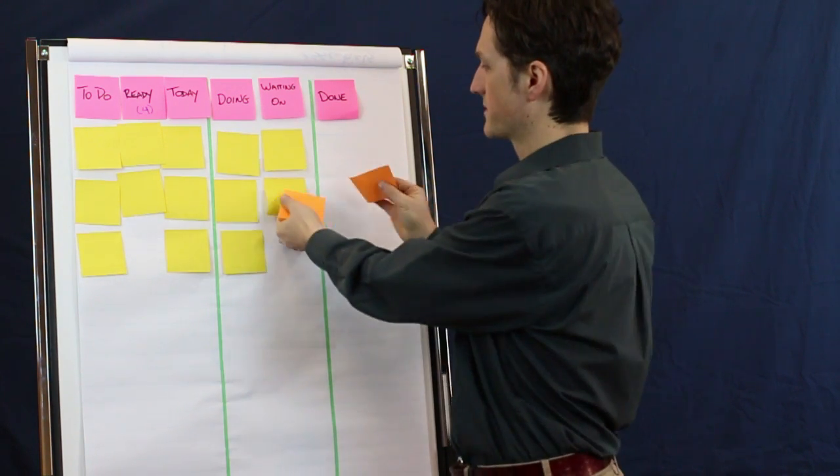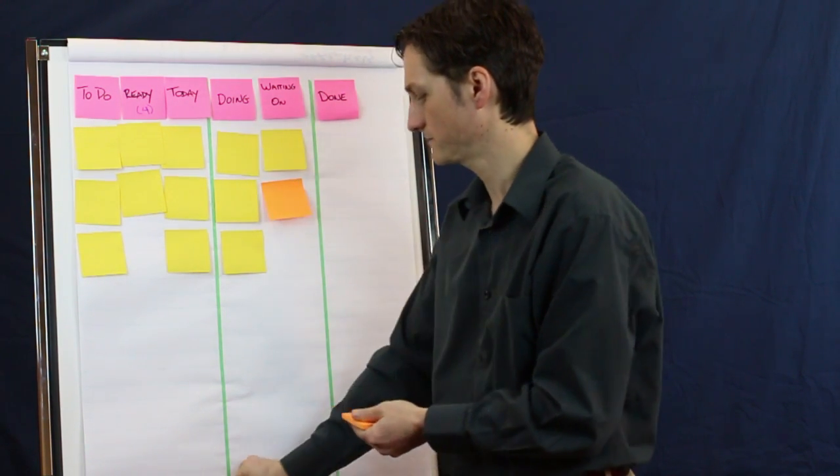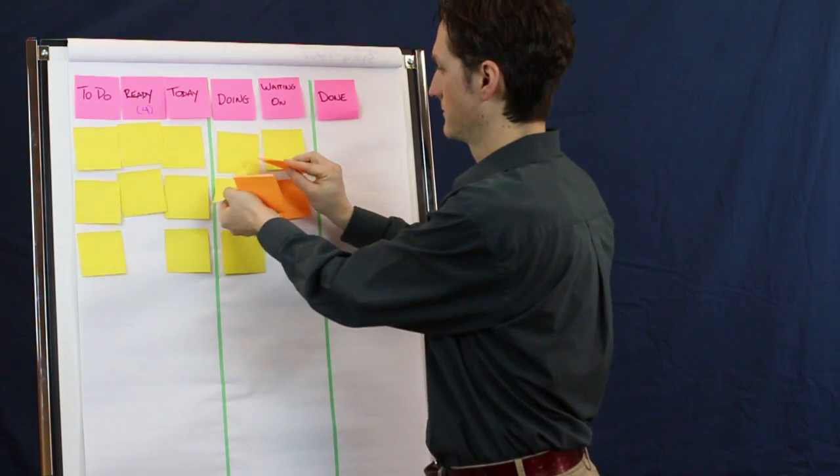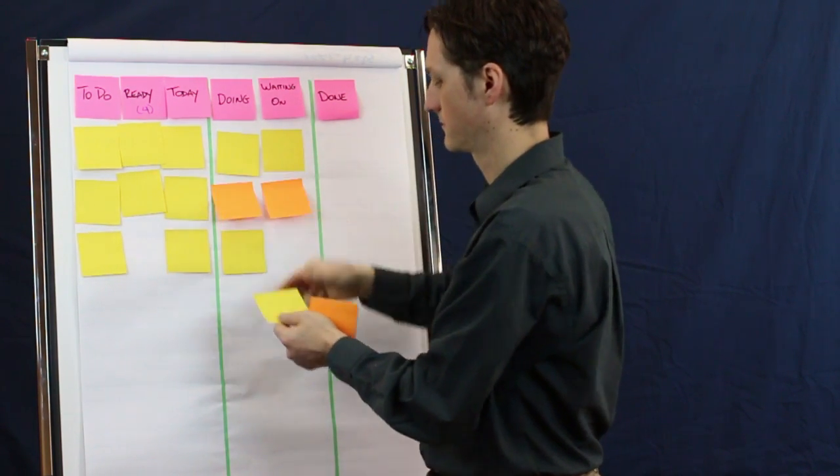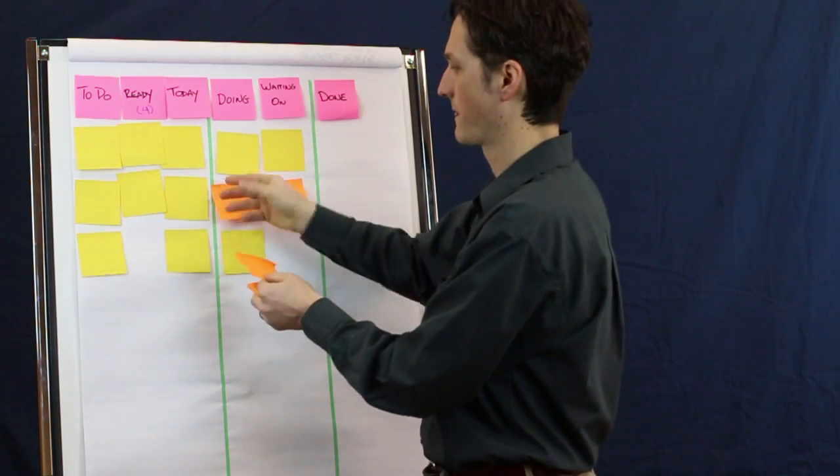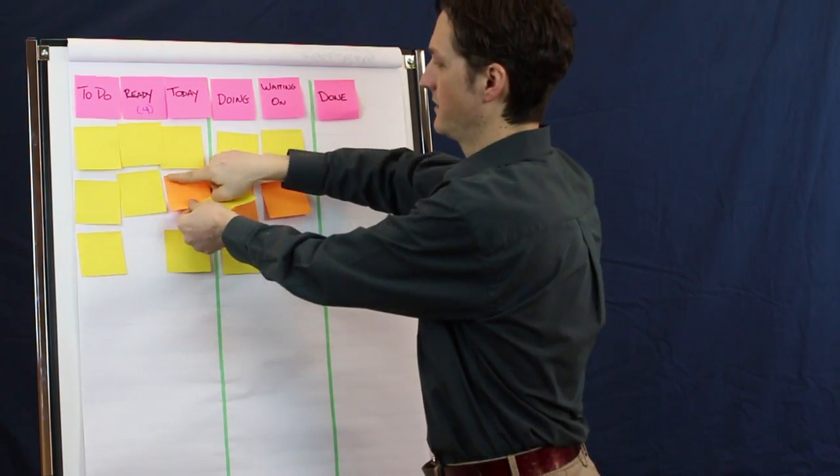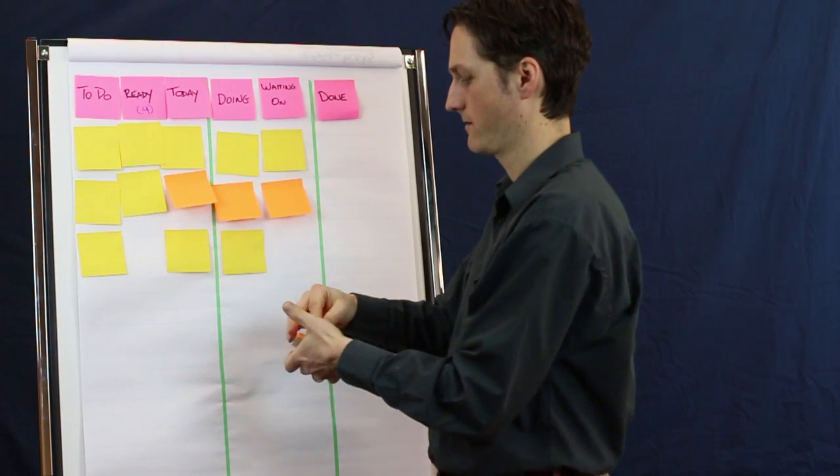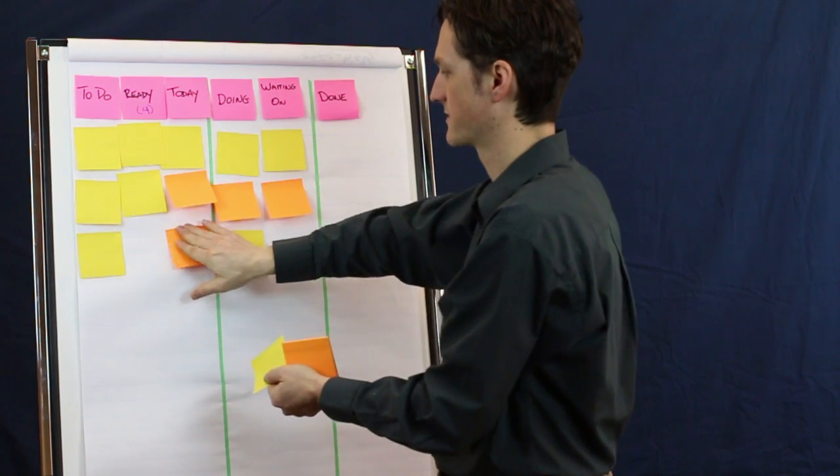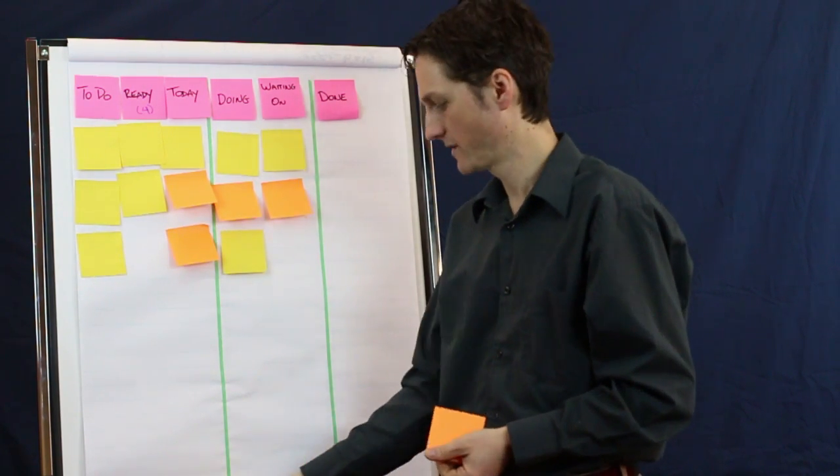So let's replace a few of these here now. In this way too, now we can start to see as we're looking at our board, how many items are in each color gives us a sense for where we're spending our time.